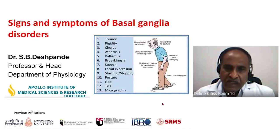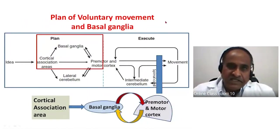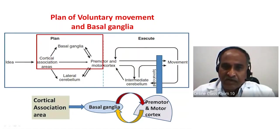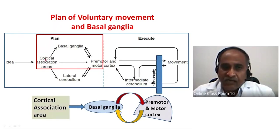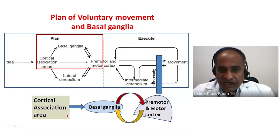Coming back to the basics of the basal ganglia: the basal ganglia is connected between the cortical association area, the premotor cortex, and the motor cortex. Information going from the cortical association area goes to the motor and premotor cortex, and it also consults the basal ganglia, whose inputs are considered for voluntary action.